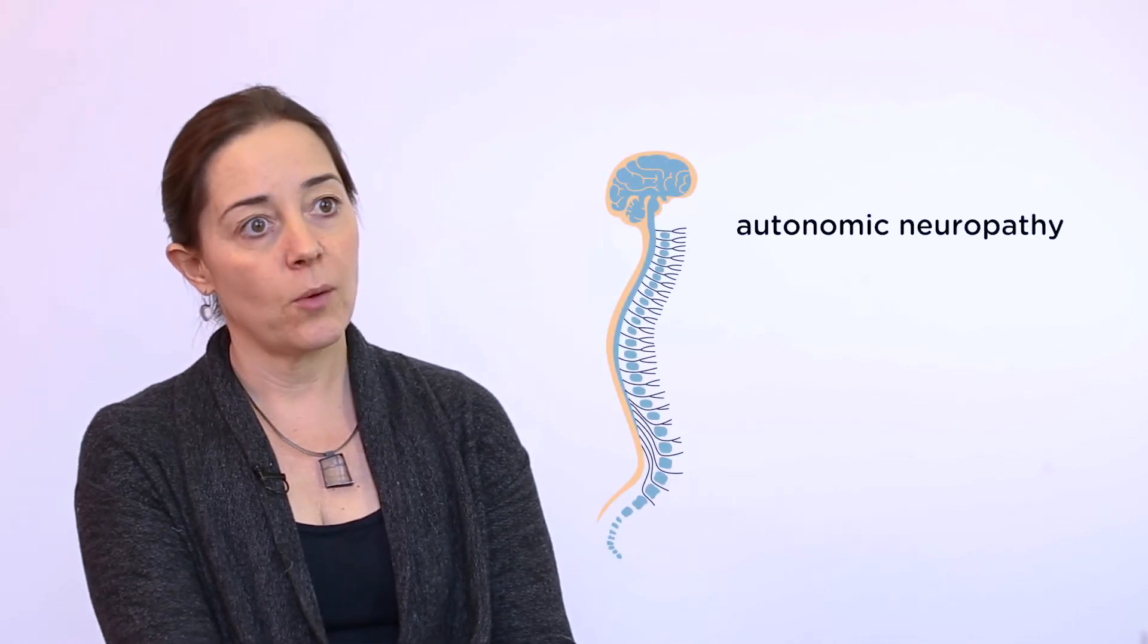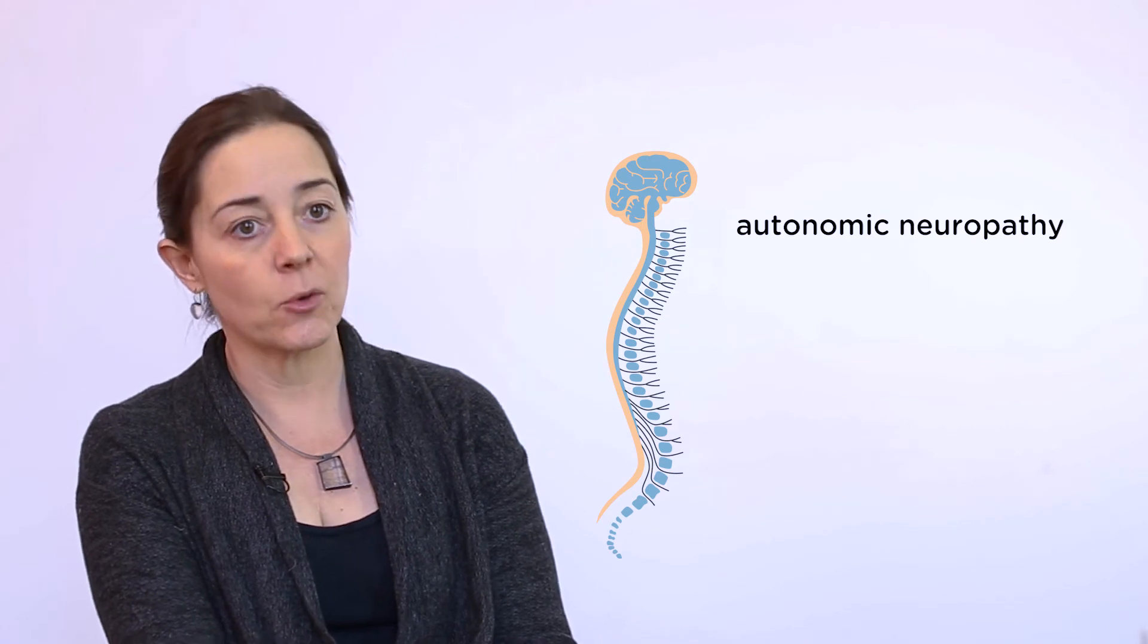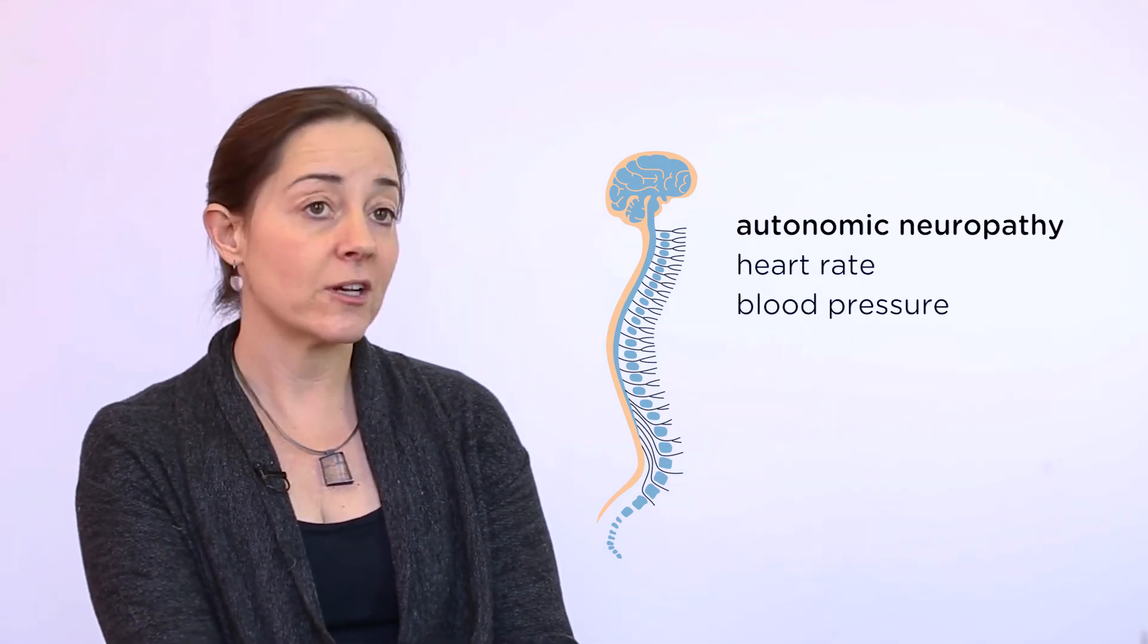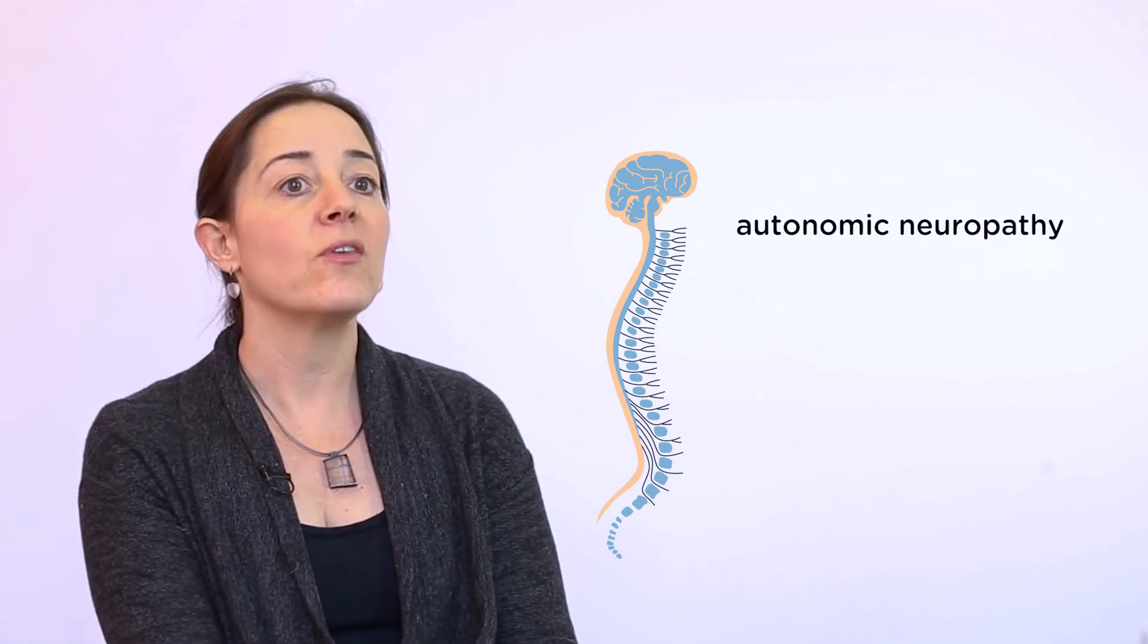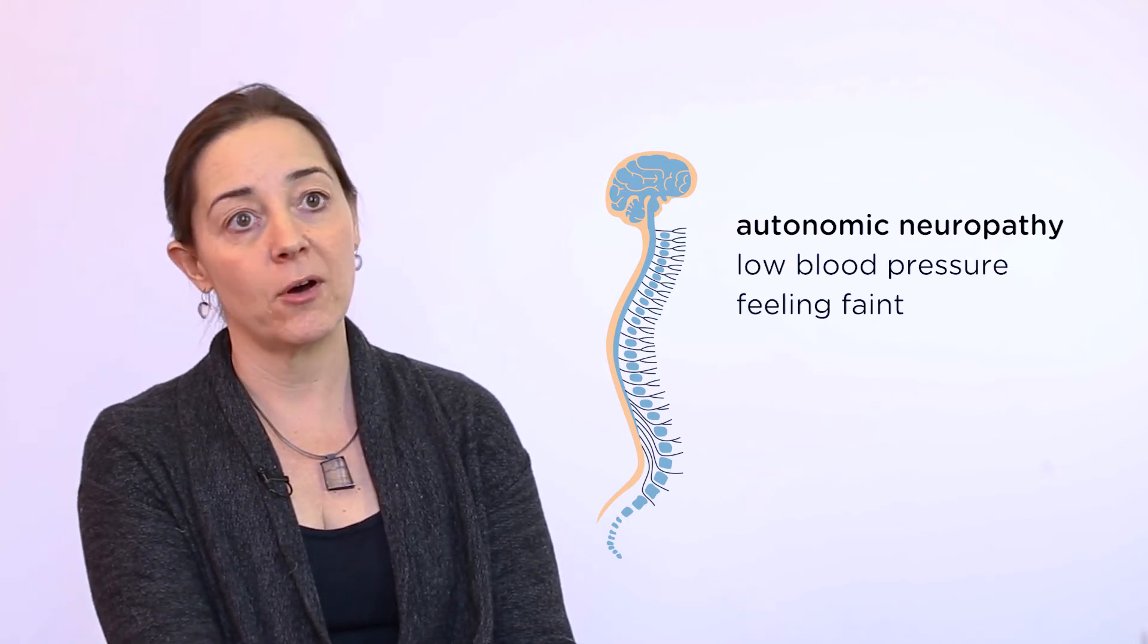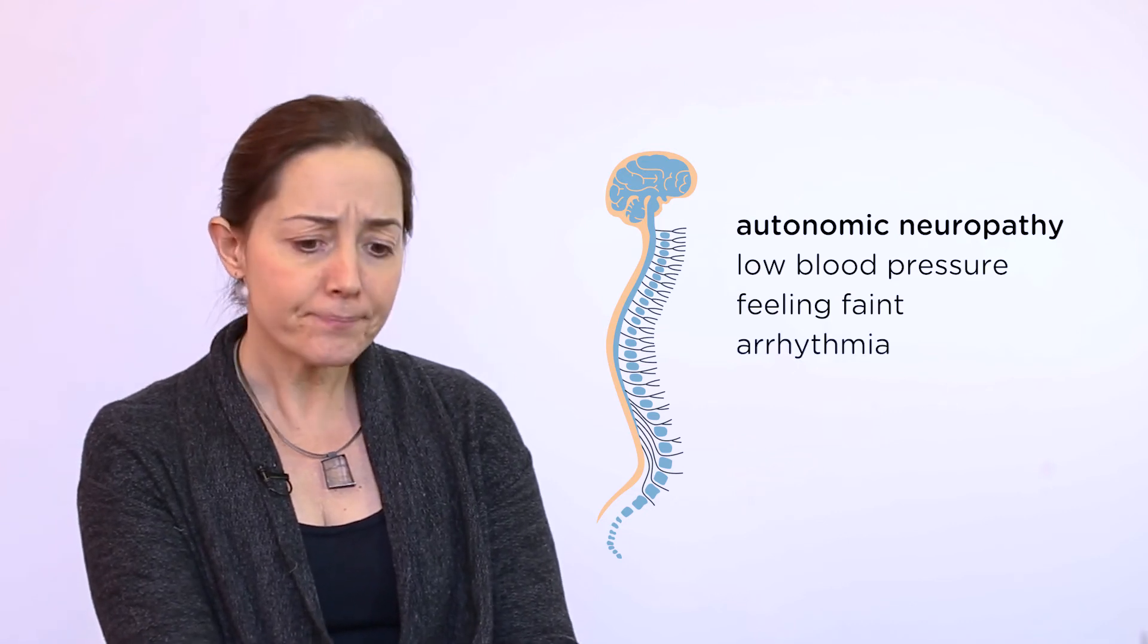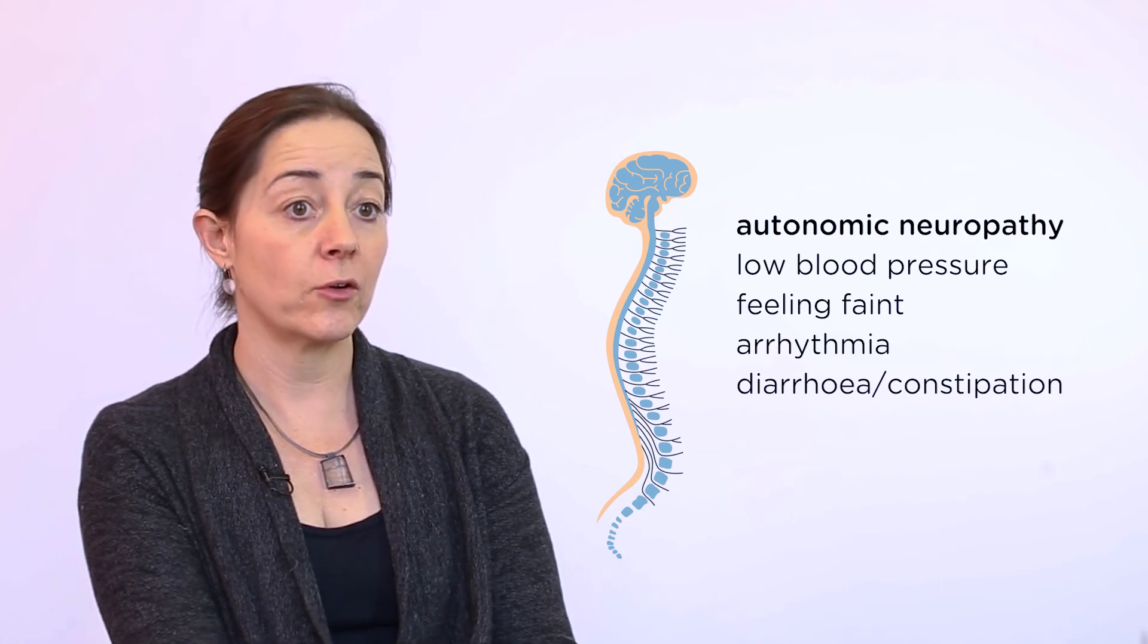Nerve involvement comes in two sorts. There's autonomic neuropathy, which is damage to the automatic nerves that control automatic functions in the body, like heart rate, blood pressure, gut function, genitourinary function, and that tends to present with symptoms of this not working so well. So low blood pressure when you stand up, sometimes feeling that you're going to faint or actually passing out, disturbances in heart rhythm, sometimes quite bad gut disturbances with alternating diarrhea and constipation.